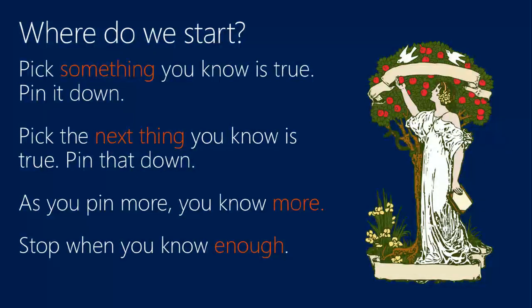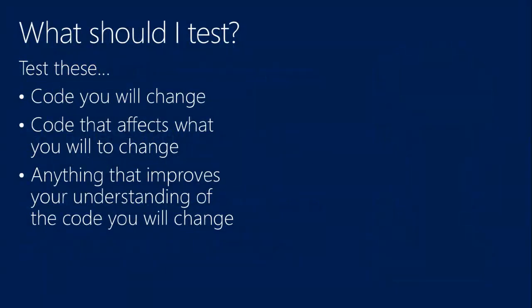Pinning down and defining the current behavior puts you in a position to make changes confidently. The most important thing to test is the code you're going to change — don't try to test everything or just increase code coverage. Test what you're going to change first. After that, test the code that will affect the thing you're changing. With legacy code you're very driven by a specific task: pin down the areas you care about, what's changing, what affects it, and what helps you understand the area you're working in — otherwise you'll be overwhelmed by the scope of the problem.